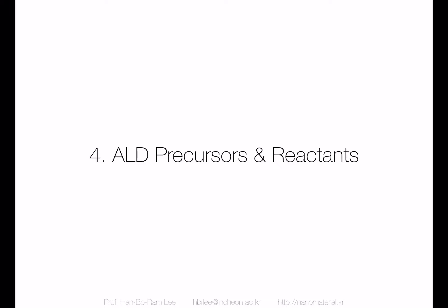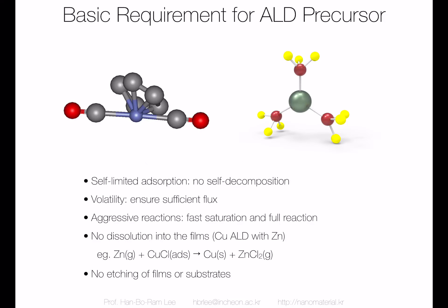We're going to study about the ALD precursor and reactant in this chapter. As I explained in the previous chapter, the precursor and reactants are pretty important chemicals that are transformed to the ALD deposited material in film form.